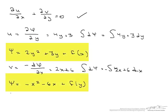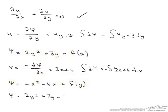And when we combine these two we come up with a stream function that is Ψ = 2y² + 3y - x² - 6x plus a constant.